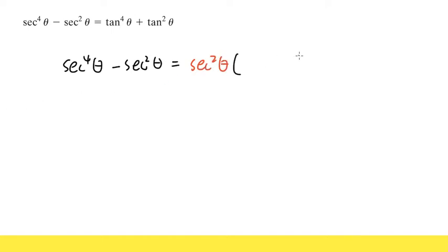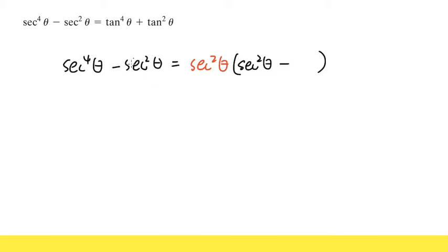Let's see what we have after factoring. Originally the first term is secant to the fourth power theta, but since I took out two of them, I have two more left, giving secant squared theta inside. Then we still have the minus. Originally the second term was secant squared theta, but since we factored it out, we just have minus one inside the parentheses.